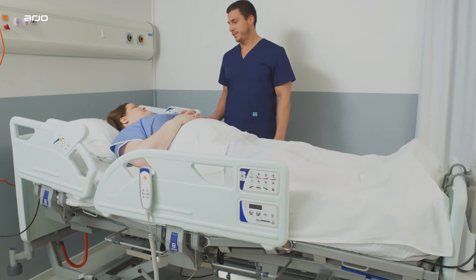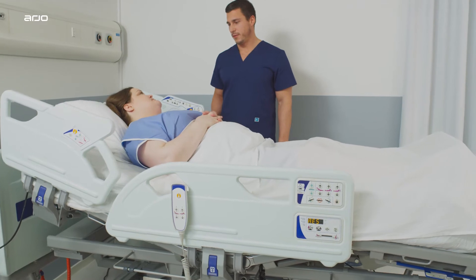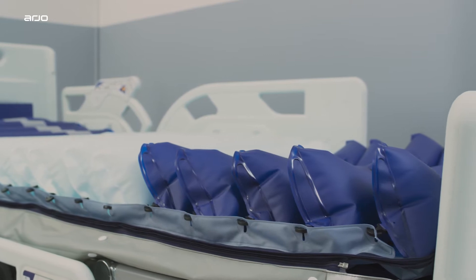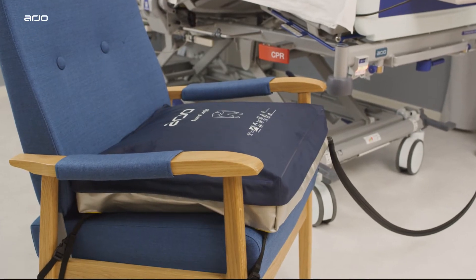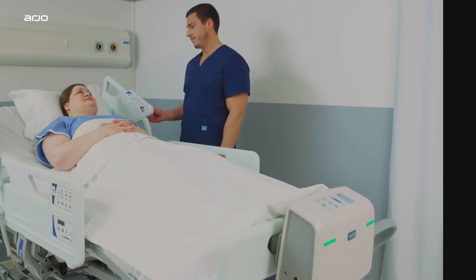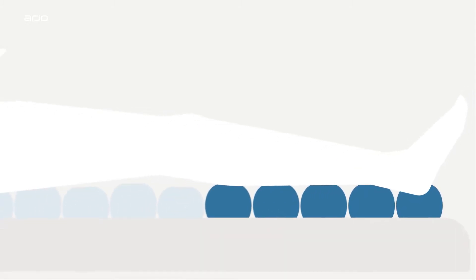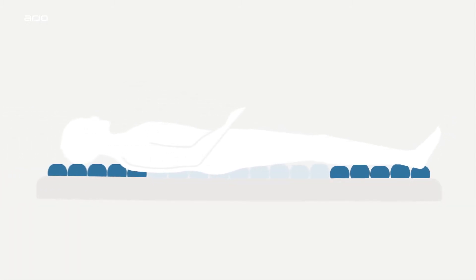The Oralis Active Alternating Pressure Redistribution System offers a solution for patients who are at high risk of, or who have already sustained, a pressure injury. The complete Oralis range includes a mattress replacement system, mattress overlay and seat cushion that can all be operated from the same pump. Designed especially for high risk and vulnerable patients, Oralis uses Arjo Automated Alternating Pressure Therapy for round-the-clock pressure area management when combined with an individualized monitoring, repositioning and wound care program.